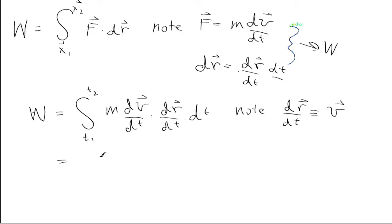So this can now be rewritten as the integral from t1 to t2 of m times dv dt dotted with velocity dt. But notice that the derivative with respect to time of the quantity v squared over 2 is equal to v dot dv dt.